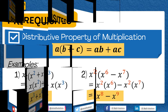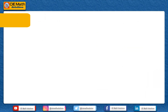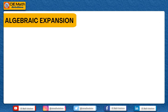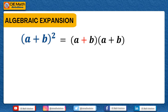Using the prerequisite concepts, let us now derive the algebraic identity a plus b squared, which is equal to a squared plus 2ab plus b squared. We know that a plus b squared means that we are multiplying a plus b to itself twice, that is a plus b times a plus b.